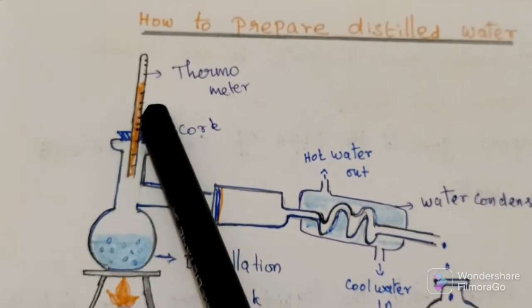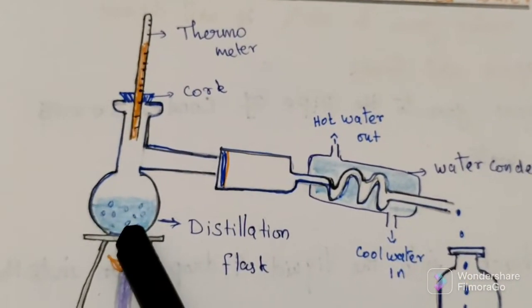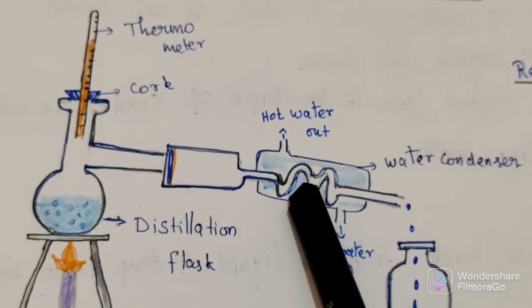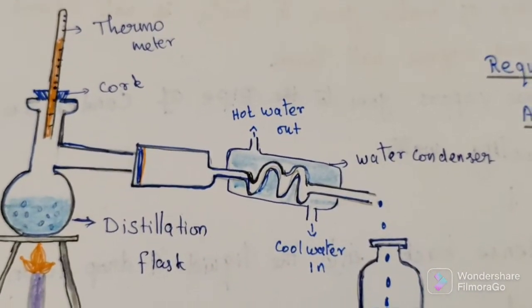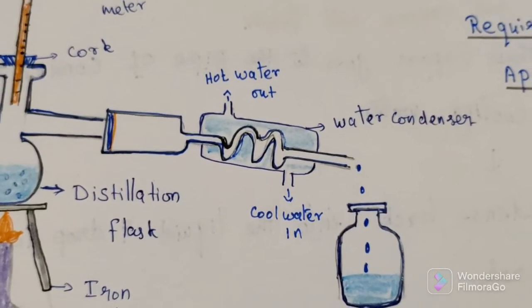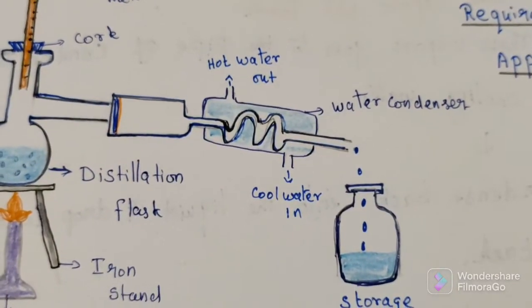When temperature will reach 100 degrees, these vapors will reach to this condenser. After that, due to the cooling water, they condense into liquid and drop down into the storage tank.